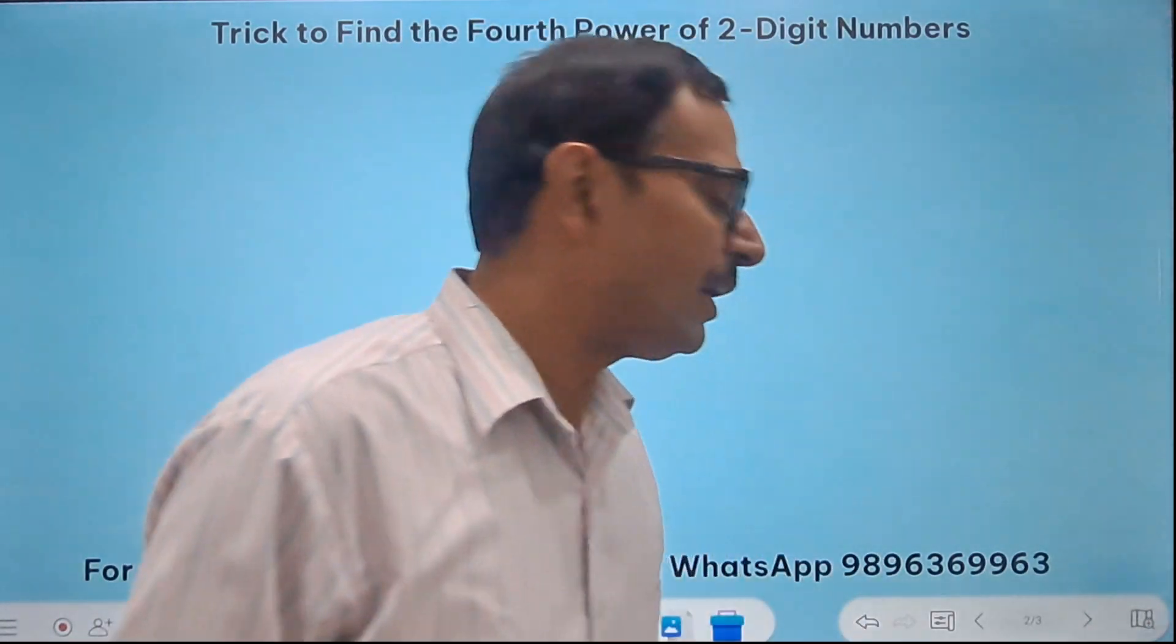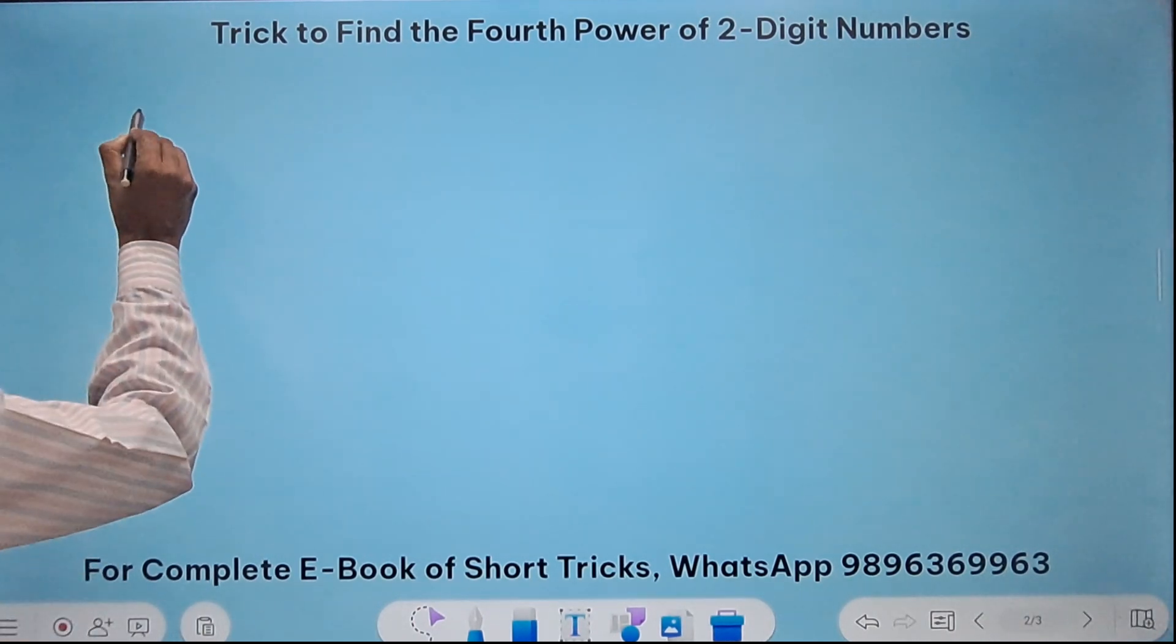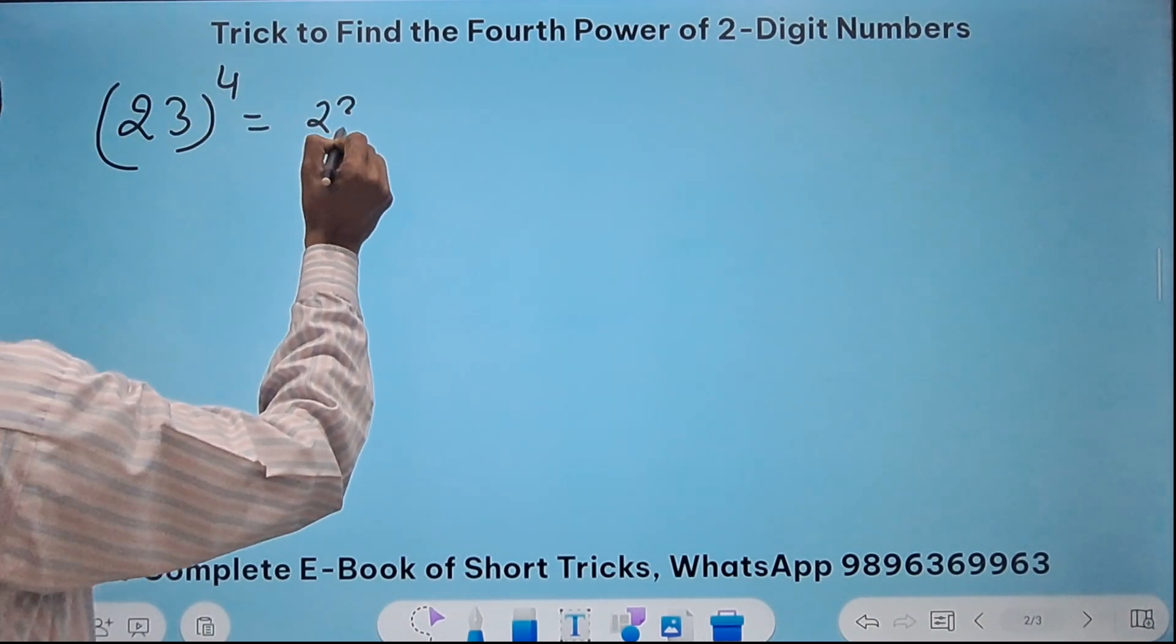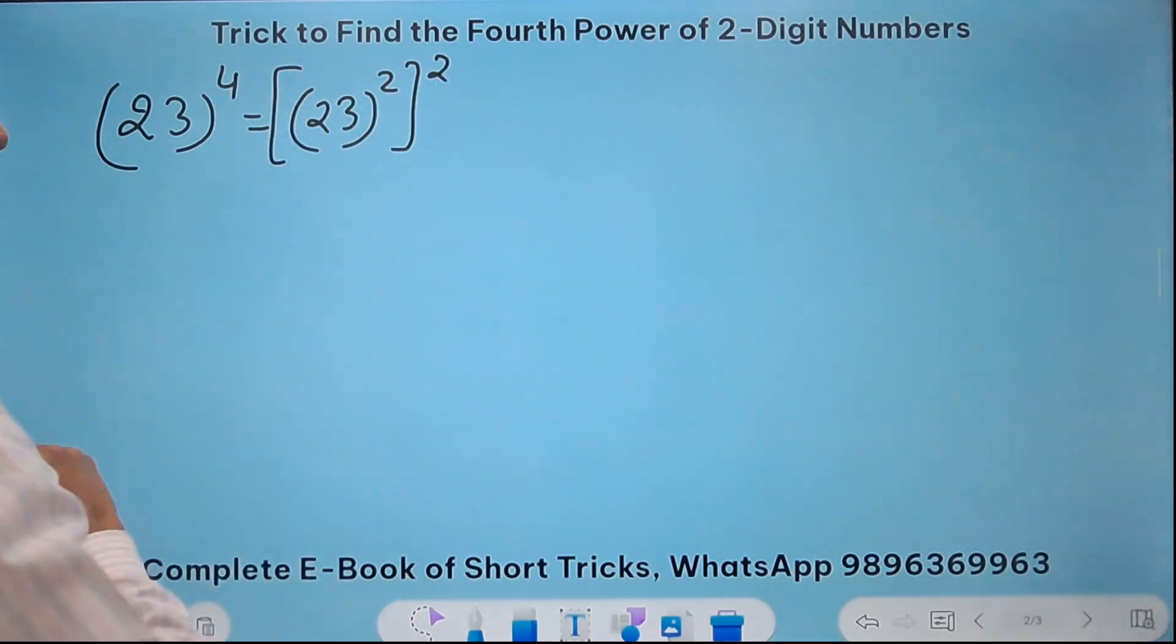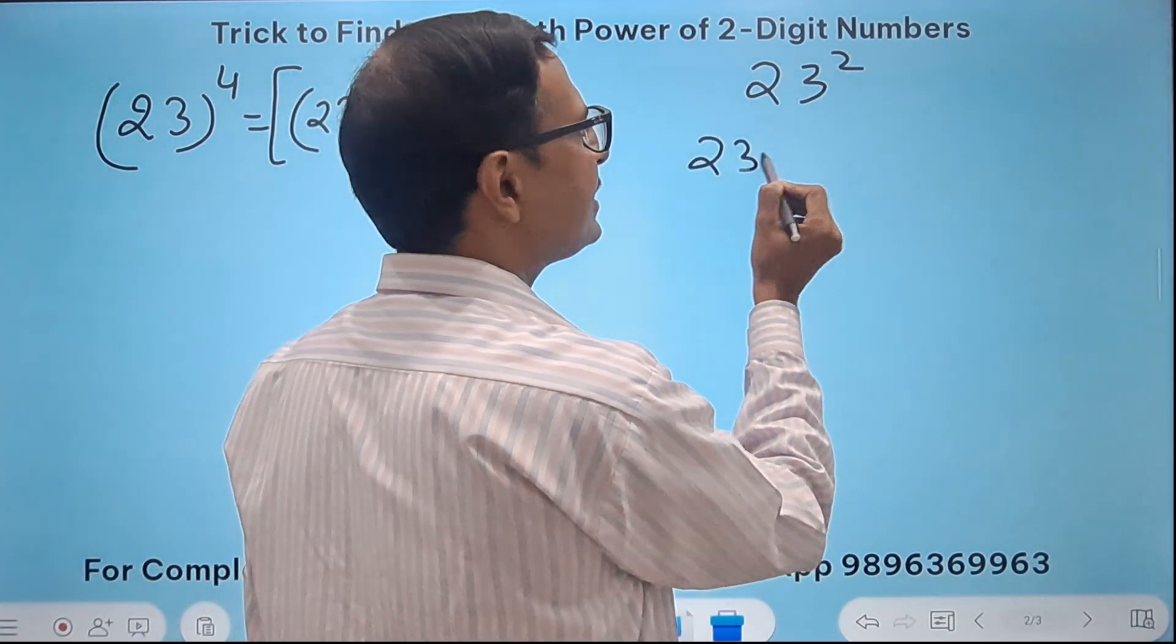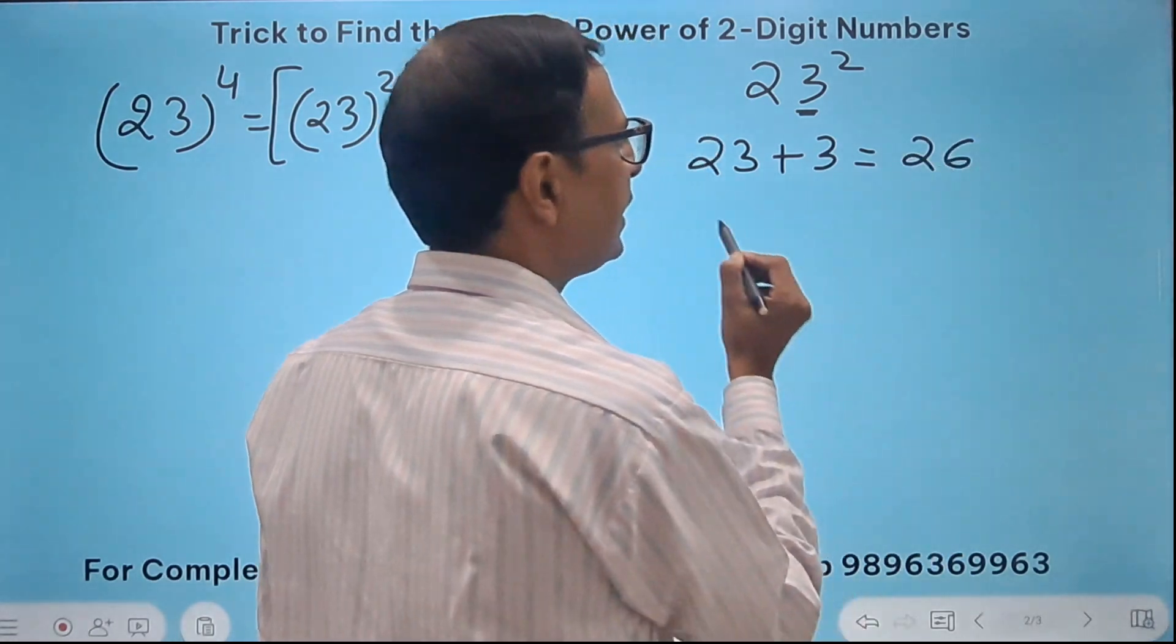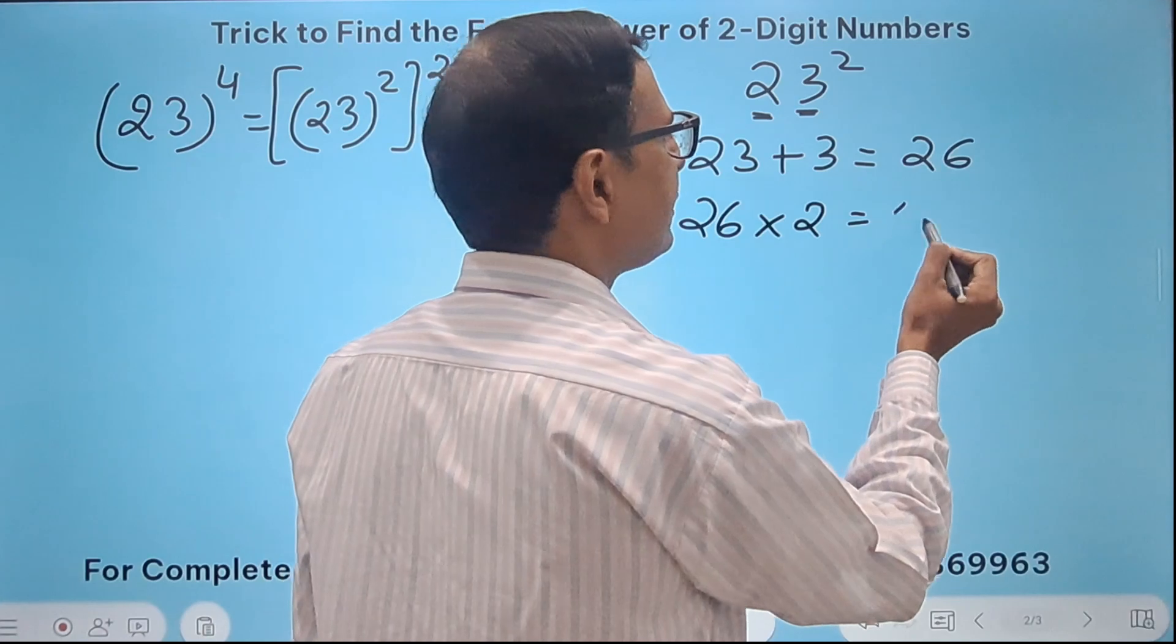Let's take one more example. You will feel more comfortable. So I'll take 23 raised to power 4 now. For that I know that this is 23 square and then I have to take the square again. So for squaring 23 I will do 23 plus the unit digit 3 that gives me 26 and then 26 multiplied by the first digit 2 that gives me 52.